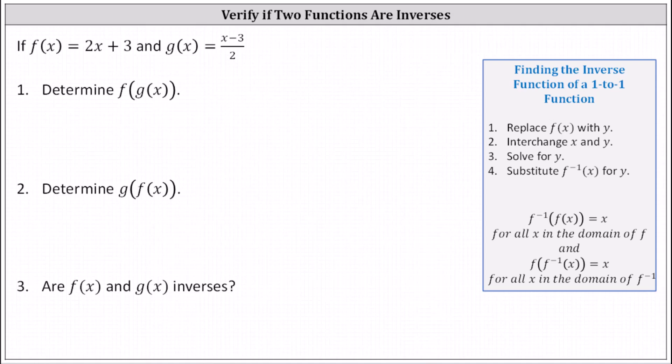Looking at our notes, if f inverse of f of x equals x and f of f inverse of x equals x, then the two functions are inverses of one another. In our case, if both composite functions are equal to x, then f of x and g of x are inverses. If either composite function is not equal to x, then the two functions are not inverses.